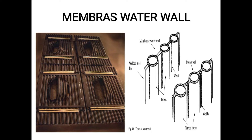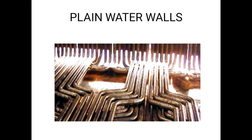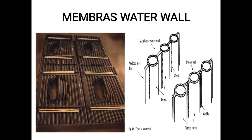Membrane water walls are used in pulverized coal boilers where there is a lot of clinker, where the coal is impure and contains high sludge or foreign particles. In plain water wall tubes there are clear gaps between the tubes, and clinker and dust can get into these spaces. Due to high sulfur content in the fuel, corrosion can occur in these spaces between the tubes.